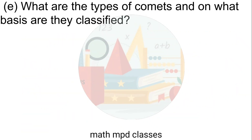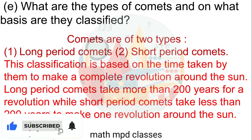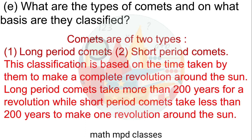E. What are the types of comets, and on what basis are they classified? Answer: Comets are of two types — first, long period comets; second, short period comets. This classification is based on the time taken by them to make a complete revolution around the sun. Long period comets take more than 200 years for a revolution, while short period comets take less than 200 years.